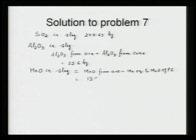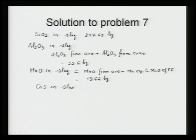The coke in this problem contains FeS. FeS from coke reacts with CaO to form CaS: CaO + FeS = CaS + FeO. So the slag also contains calcium sulfide. From the amount of FeS in kg-moles, CaS in slag = 8.18 kg.